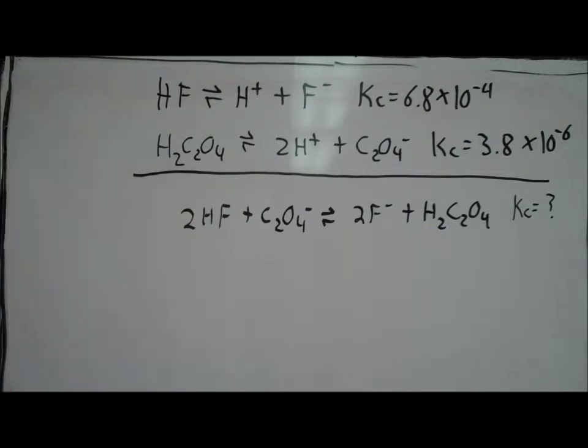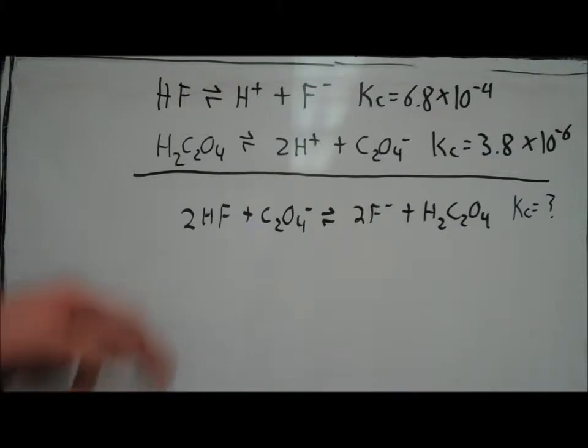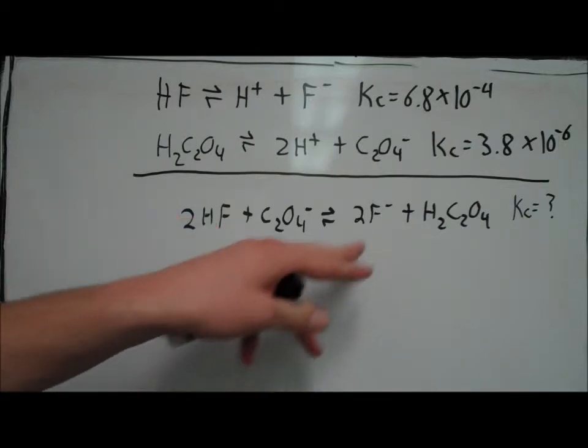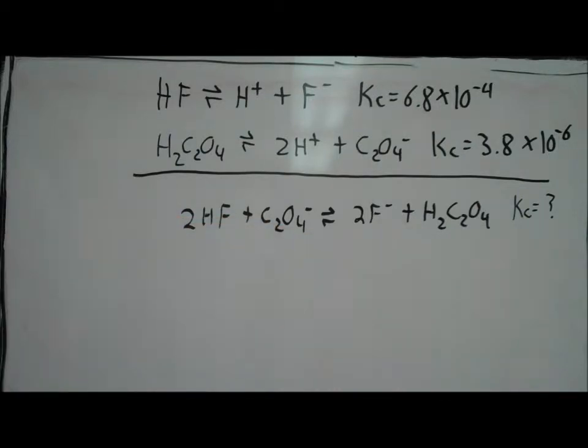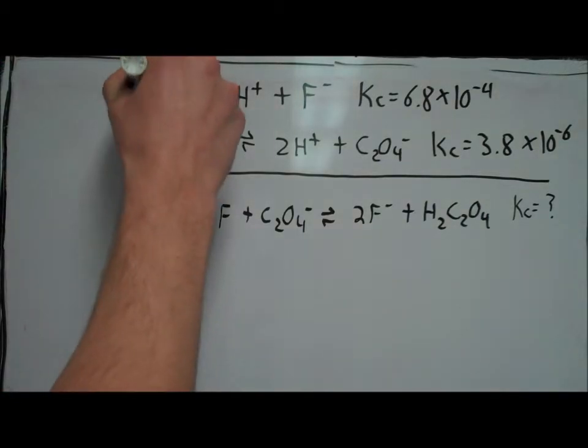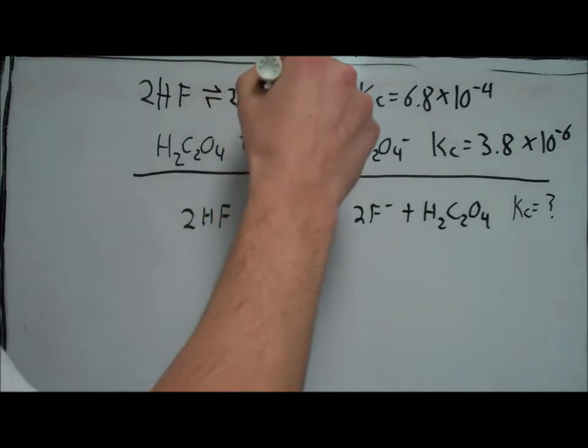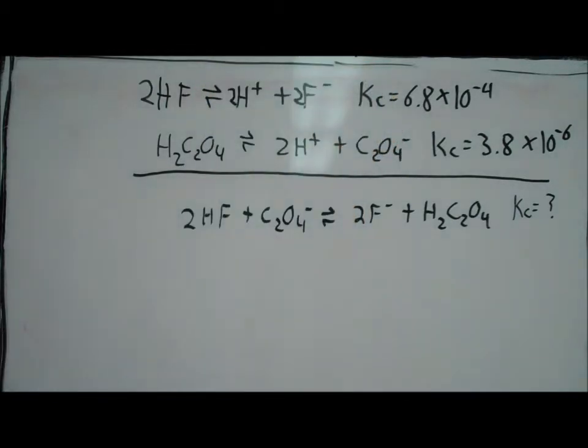So for the first equation, hydrogen fluoride dissociates into hydrogen ions and fluoride ions. In the final equation, we know that we have two hydrogen fluorides and two fluoride ions. Therefore, we have to double the equation in the top. So we put two in front of each thing in the top equation. Now if we double everything in the top equation, then we have to square the equilibrium constant value.